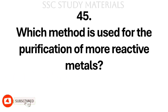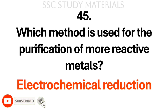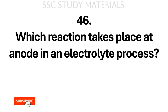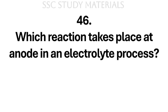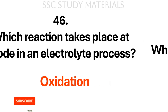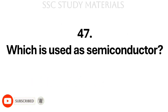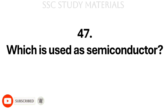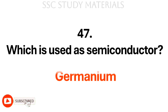Question No. 45: Which method is used for the purification of more reactive metals? Answer: Electrochemical reduction. Question No. 46: Which reaction takes place at the anode in an electrolytic process? Answer: Oxidation. Question No. 47: Which is used as semiconductor? Answer: Germanium.